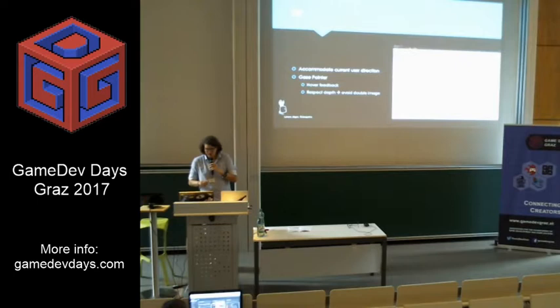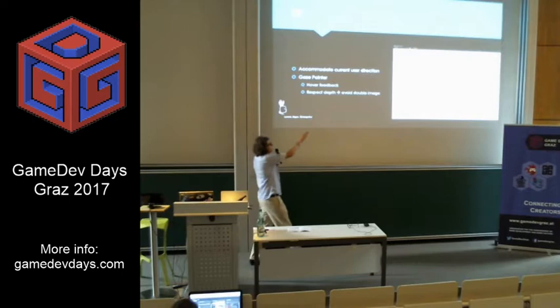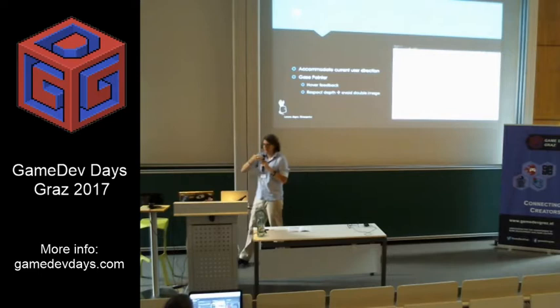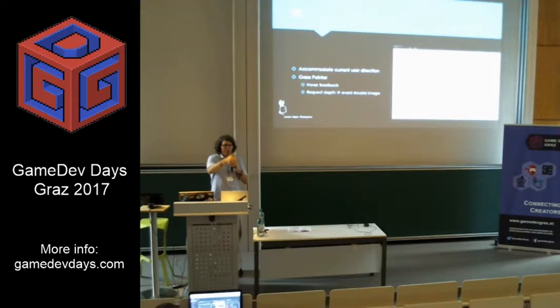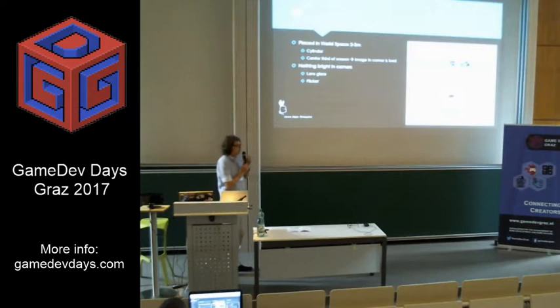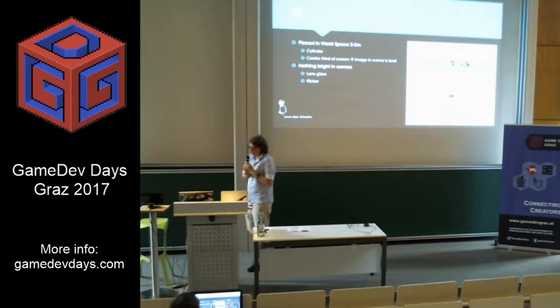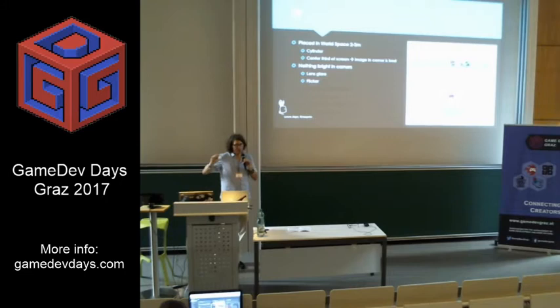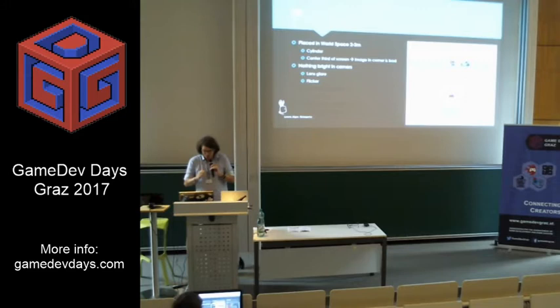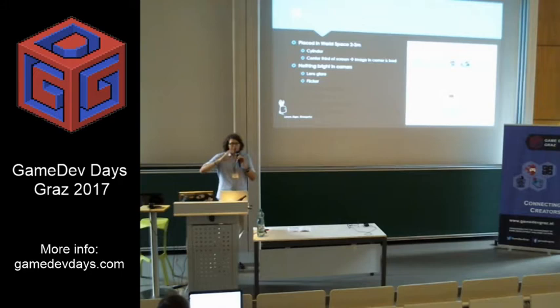Also important for the gaze pointer — the thing showing where the user is looking — it should always be at the depth of the geometry where you're looking. If it's at a fixed distance in front of you, the user is focusing on the actual object further away, so the gaze pointer has the wrong focus distance and you see it double. The UI should be placed in a cylinder around the user at about 2 meters — the comfortable viewing distance. Keep it in the center of the user's field of view; don't put it in the corner like in normal video games. The corners have the worst chromatic aberration and the most display artifacts.